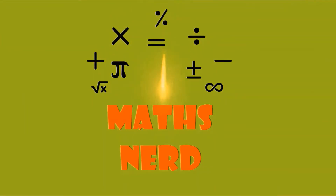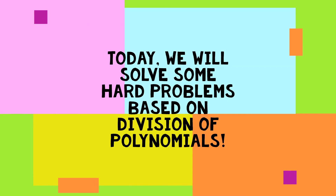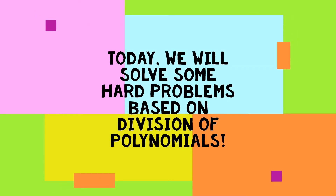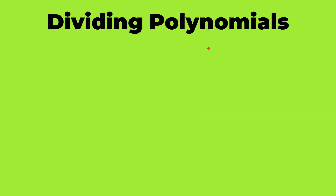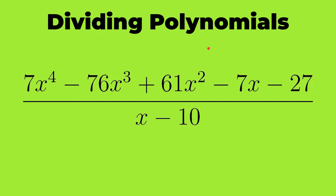Hello friends, welcome to Maths Nerd. Today we will solve some hard problems based on division of polynomials. The first question is 7x⁴ minus 6x³ plus 61x² minus 7x minus 27, divided by x minus 10. We will follow the same steps that we use in the long division method.